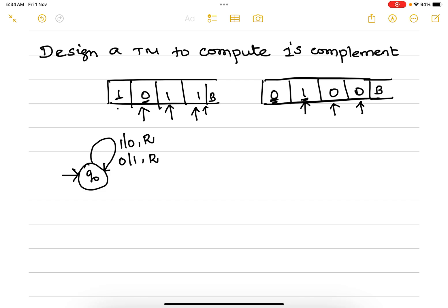This has to be continued until blank comes. Once blank comes, we have converted all string into its one's complement. When a blank comes, replace that with blank and halt. So this is qf.